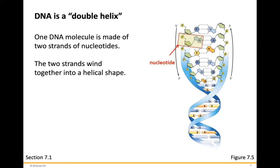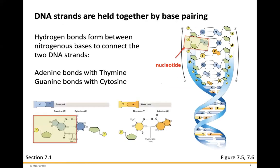The fact that DNA is double-stranded is referred to as a double helix. One DNA molecule is made up of two strands of nucleotides that wind together in a helical shape. DNA strands are held together by base pairing. Hydrogen bonds form between the nitrogenous bases to connect the two strands. Adenine always bonds with thymine by two hydrogen bonds, and guanine always bonds with cytosine with three hydrogen bonds.